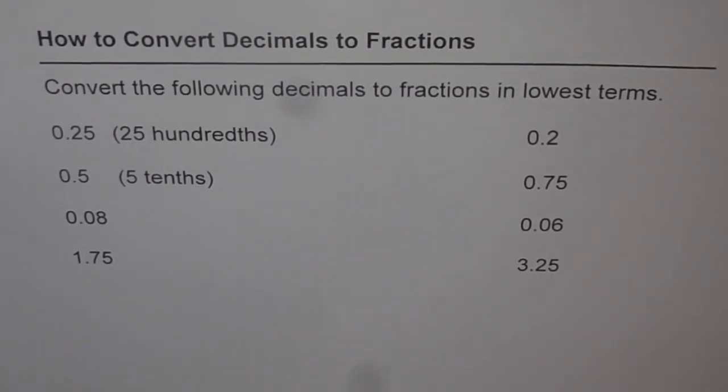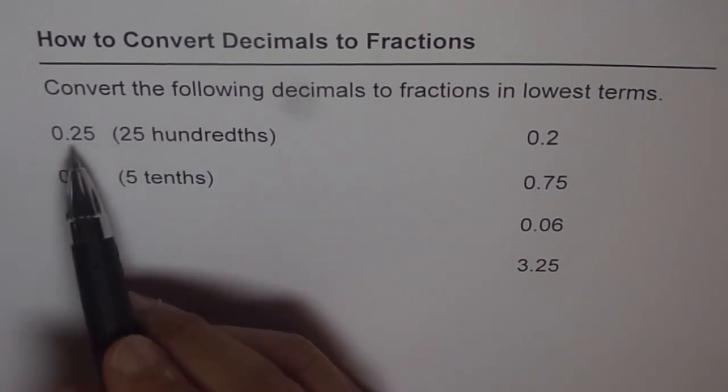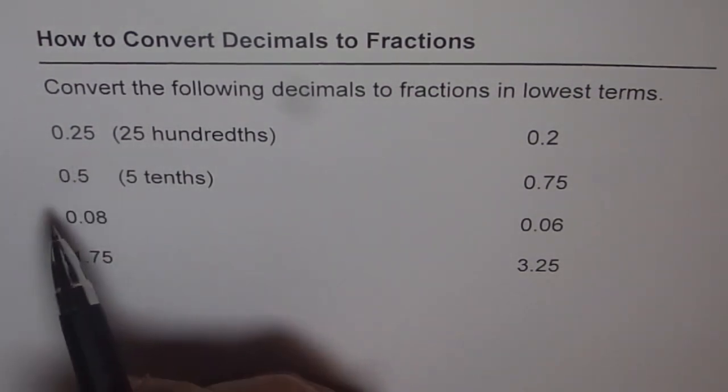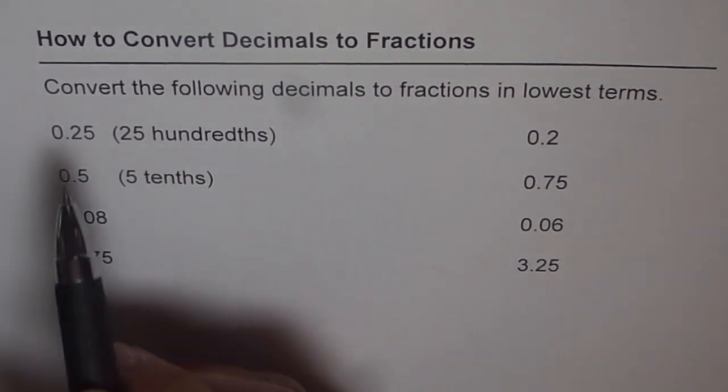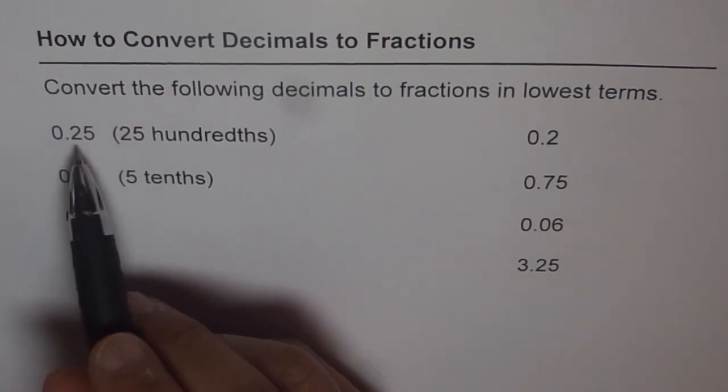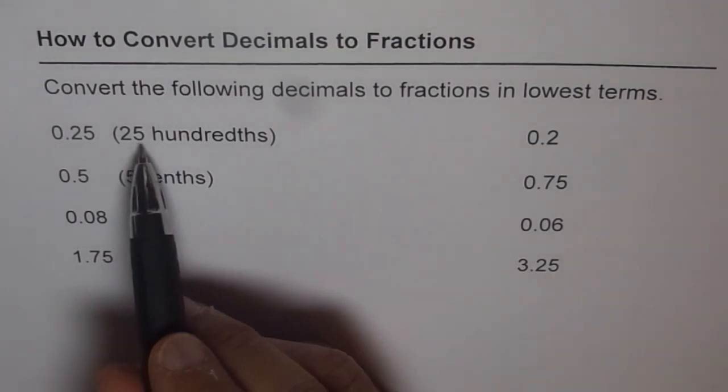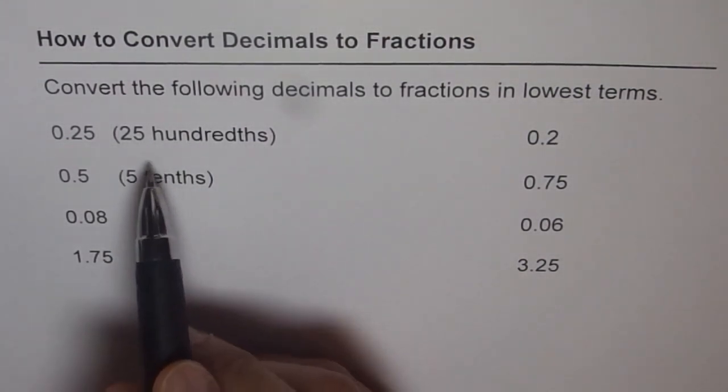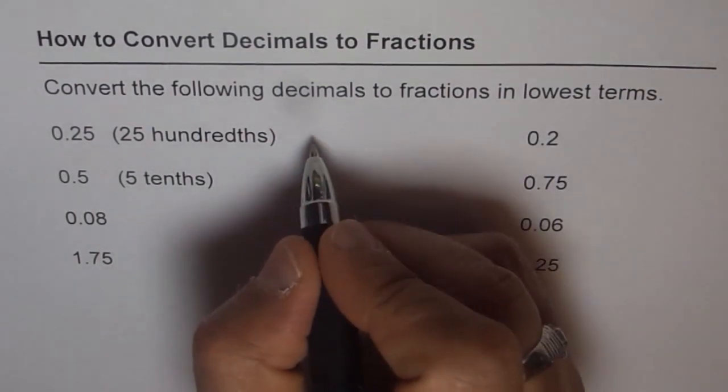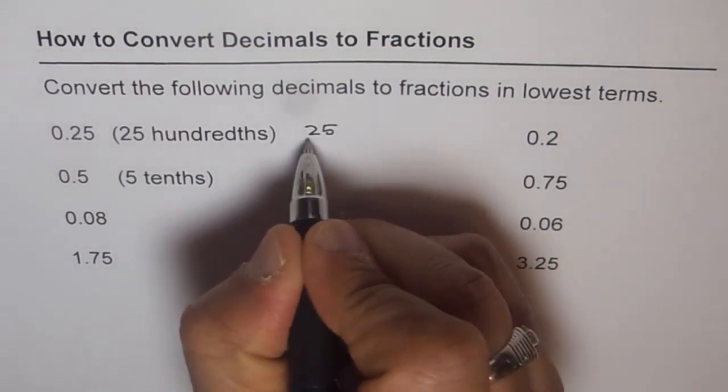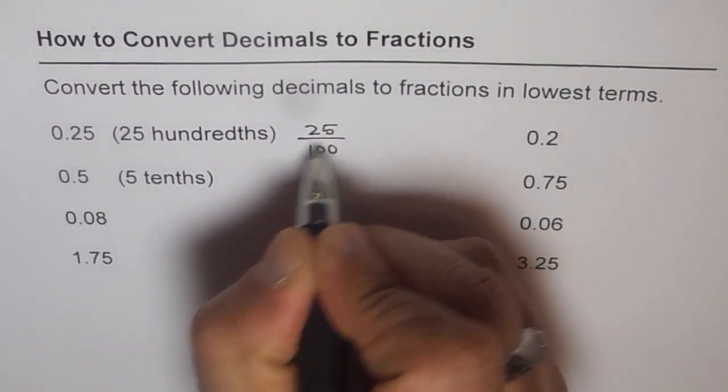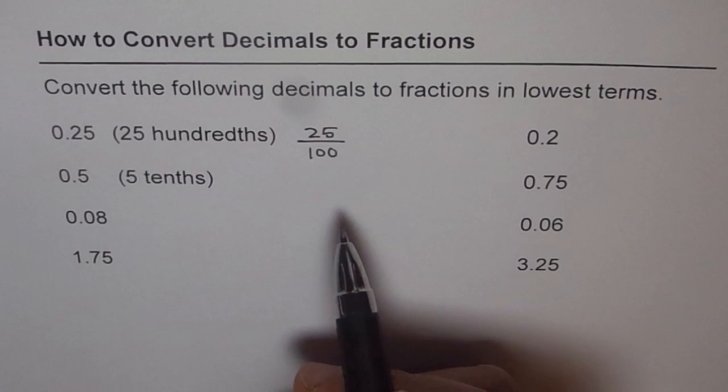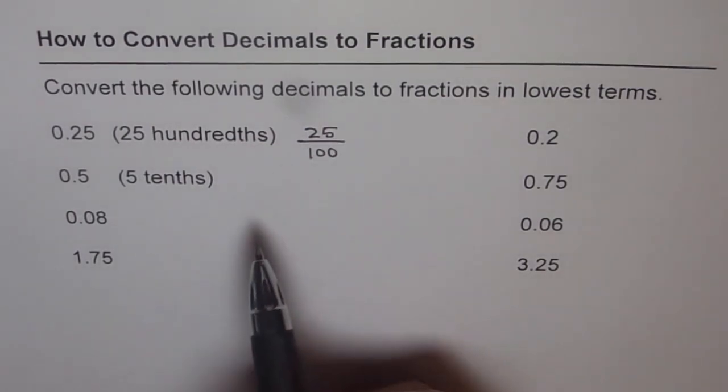Now let me take one example and that is 0.25. One way of converting is like reading the decimals in the right way. For example how will you read 0.25? 0.25 is 25 hundredths. So 25 hundredths means 25 over 100. That is the meaning of 25 hundredths. So as soon as you read you get your answer in fractions. Actually you are understanding it in fractions only.